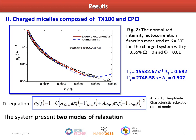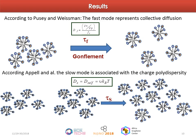For the charged system, figure 2 shows the normalized intensity autocorrelation function. We observe that the best fit is by using a sum of exponentials. The system exhibits two relaxation modes. We obtain the amplitude and decay rate for each mode — fast and slow. According to Pusey and Wiseman, the fast mode describes concentration fluctuation where there is competition between the osmotic pressure and inter-micellar friction, leading to rearrangement of the inter-particle distance while keeping the same spatial arrangement. According to Appel et al., the slow mode is associated with charge polydispersity — the relative diffusion of micelles having high charge against micelles of low charge.